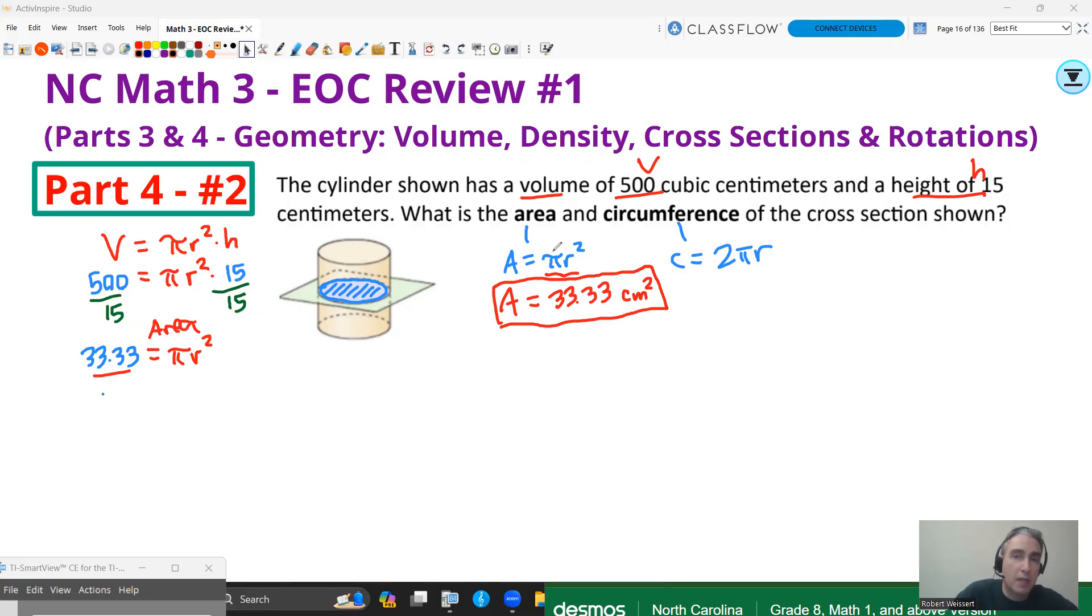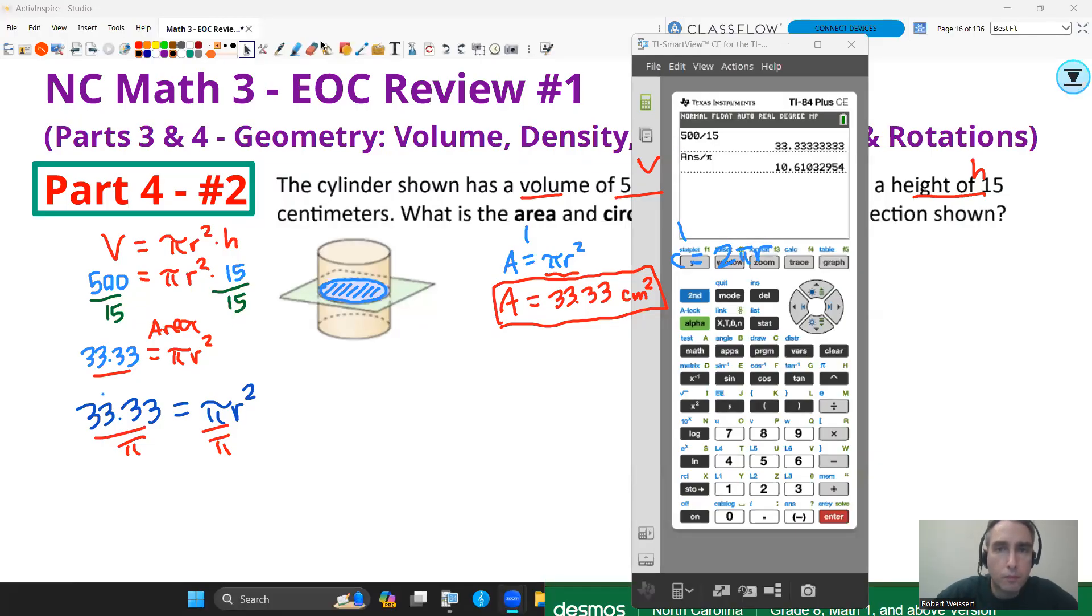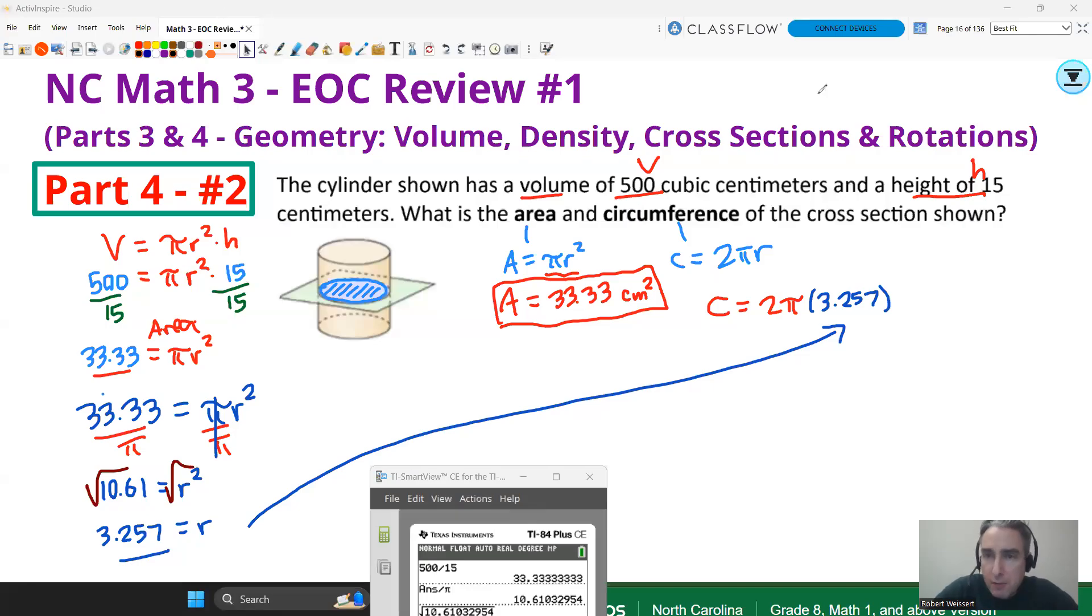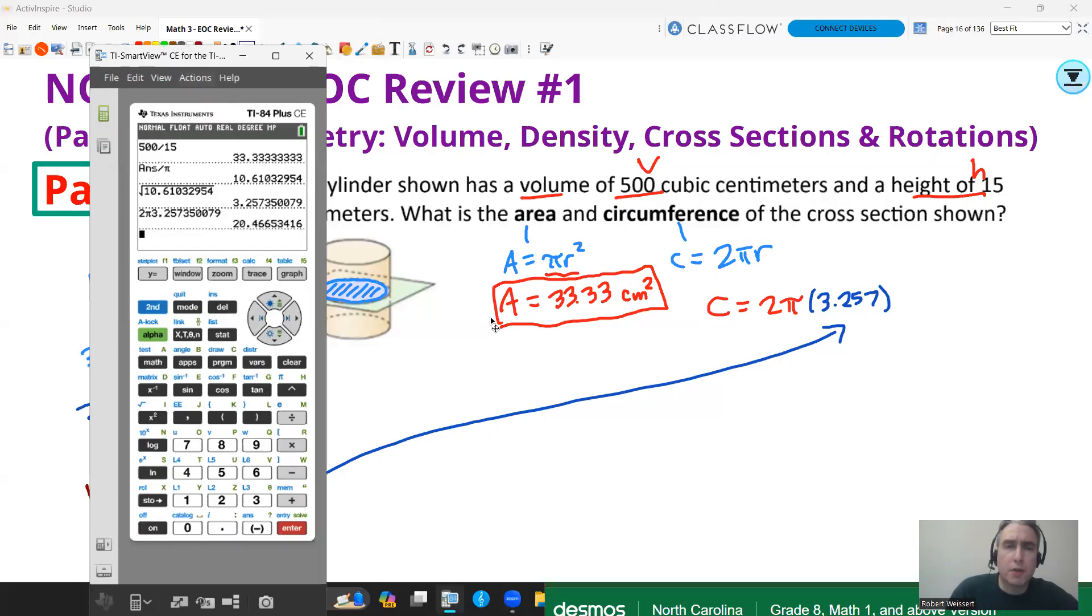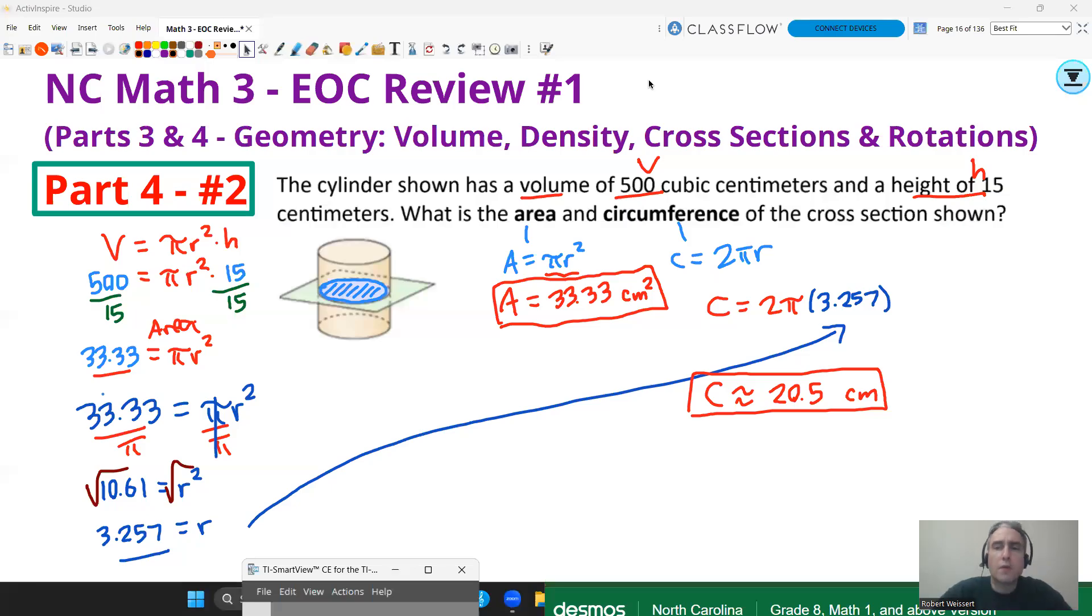Now, to get the circumference, I'm going to need to finish solving that for the radius. So since 33.33 is pi r squared, you're going to want to divide both sides by pi and you get about 10.61. Next, you're going to want to square root that 10.61, so the square root of that answer is about 3.257. We'll plug that right into the circumference formula, and 2 times pi times that number will give you your circumference. And it looks like we get about 20.47, or we'll just say about 20.5 and round that up. Circumference would be about 20.5 centimeters.